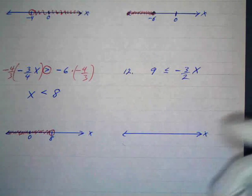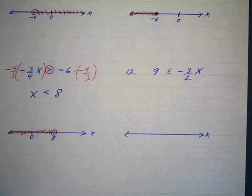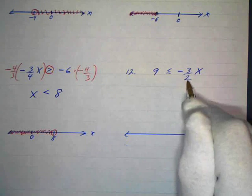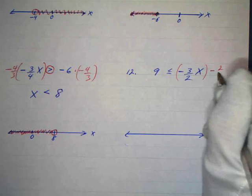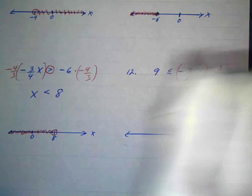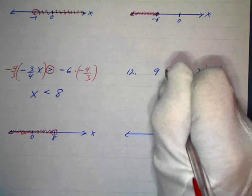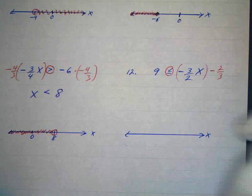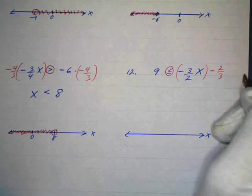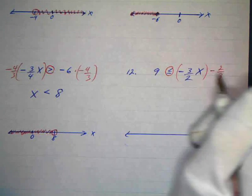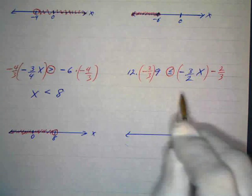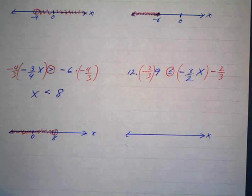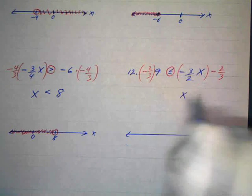One more example — this one has the variable on the right, which I thought I'd include. We like the variable on the left because it's easier to interpret, but first we'll find what x is. We'll multiply both sides by negative 2 over 3. Since I'm multiplying by a negative, I've got to circle the inequality. A negative times a negative is a positive; 2 over 3 times 3 over 2 is 1, so I just have x. I change the direction — instead of pointing left, it now points right.